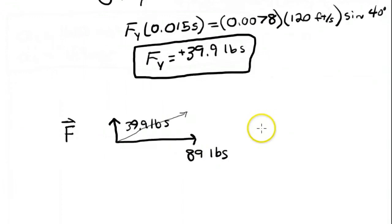And that works out to be 97.5 pounds. And then we can also calculate this angle here because we know those two, 39.9 and 89, and we can use trigonometry and that angle is 24.2 degrees. And so that is the solution.